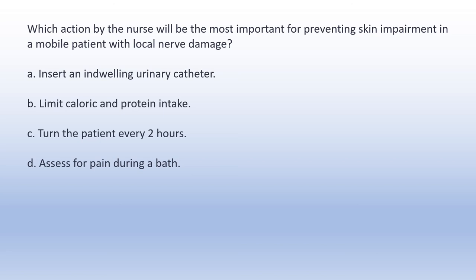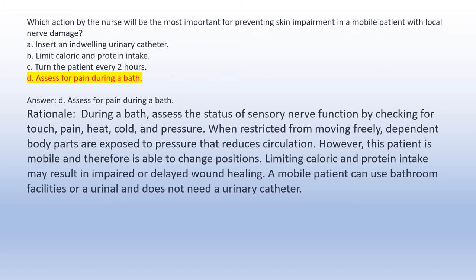Which action by the nurse will be most important for preventing skin impairment in a mobile patient with local nerve damage? A. Insert an indwelling urinary catheter. B. Limit caloric and protein intake. C. Turn the patient every two hours. D. Assess for pain during a bath. Answer D: Assess for pain during a bath. Rationale: During a bath, assess the status of sensory nerve function by checking for touch, pain, heat, cold, and pressure. This patient is mobile and therefore able to change positions. Limiting caloric and protein intake may result in impaired wound healing. A mobile patient can use bathroom facilities and does not need a urinary catheter.